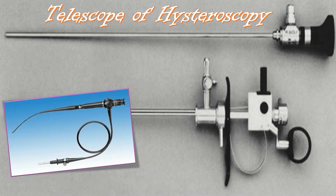The different parts of the hysteroscope include, first, the telescope. Telescopes are of two types: the rigid telescope, which is the most commonly used, with an outer diameter of about 10 mm using monopolar electrosurgery; and the flexible telescope, which offers the advantage of negotiating the scope along the uterine cavity with a no-touch technique.